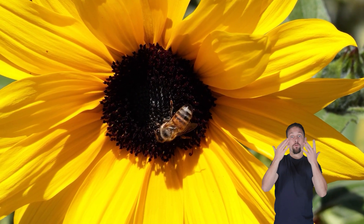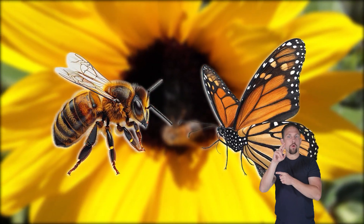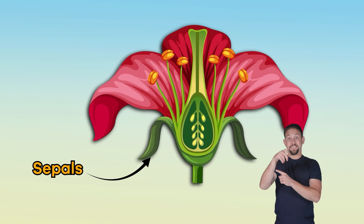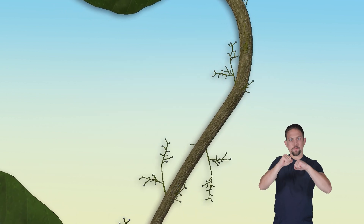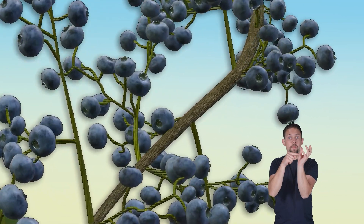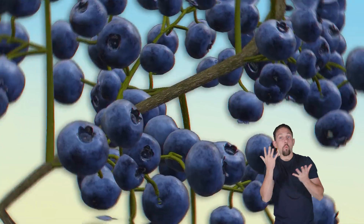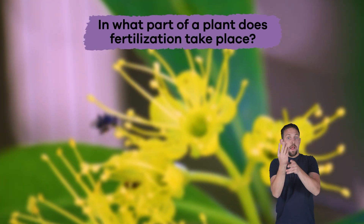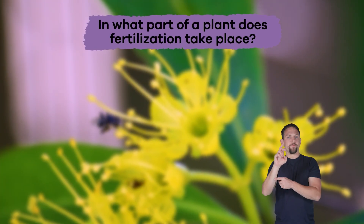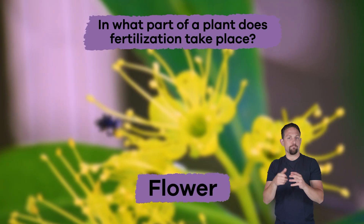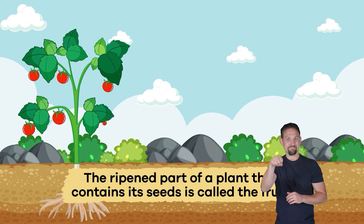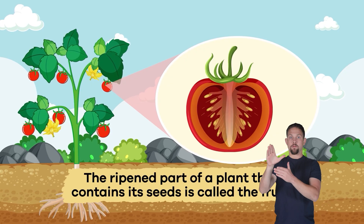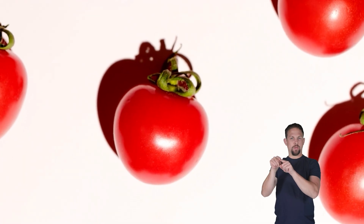Flowers are the seed-making part of the plant, where fertilization takes place. Their colorful petals attract pollinators like bees and butterflies. The sepals below the flower protect its buds, and once bloomed, the flowers may eventually turn into fruits or vegetables. In what part of a plant does fertilization take place? The flower!